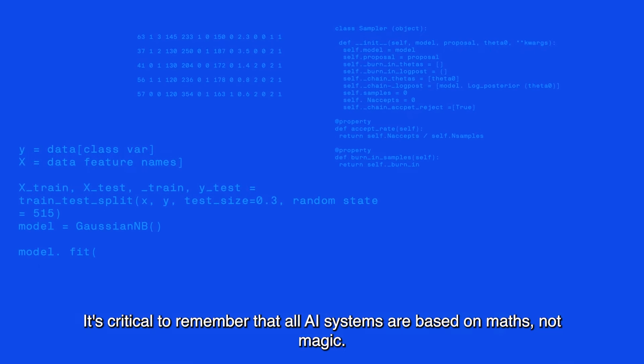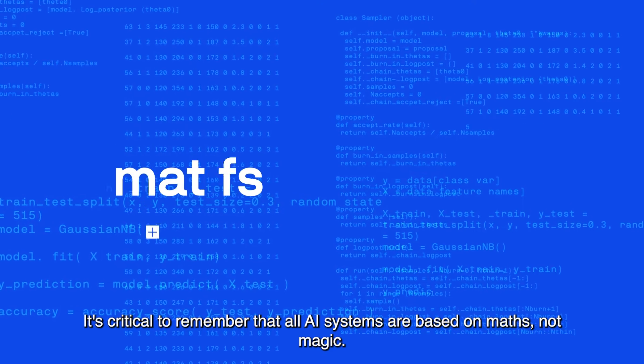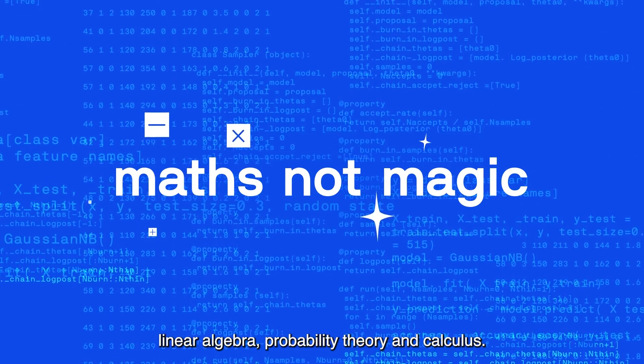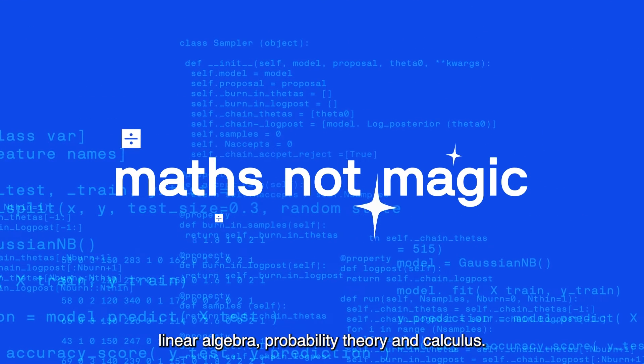It's critical to remember that all AI systems are based on maths, not magic. Machine learning is underpinned by statistics, linear algebra, probability theory, and calculus.